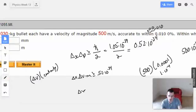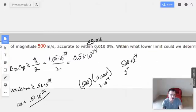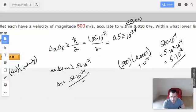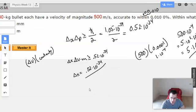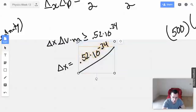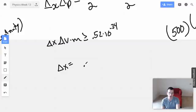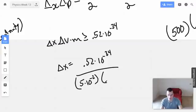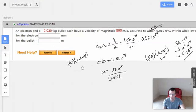So delta x equals 0.52 times 10 to the negative 34th over 500. This is 5 times 10 squared times 10 to the negative 4th, which is 5 times 10 to the negative 2nd. So 0.52 times 10 to the negative 34th over 5 times 10 to the negative 2nd. I'll do the bullet, now I'll do the electron.